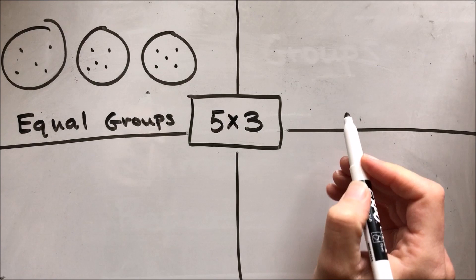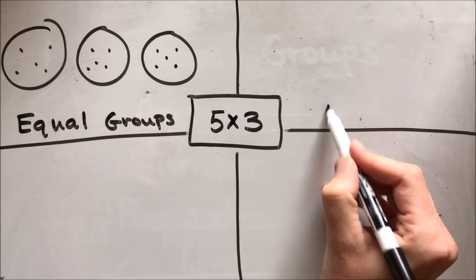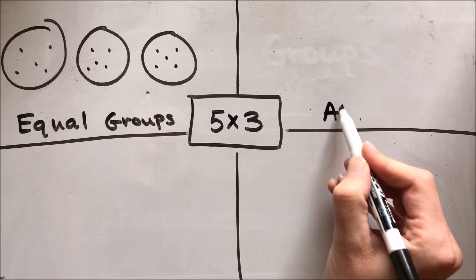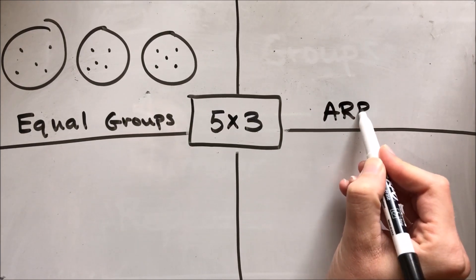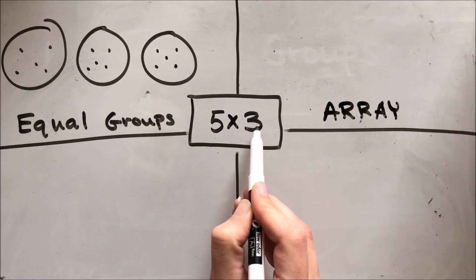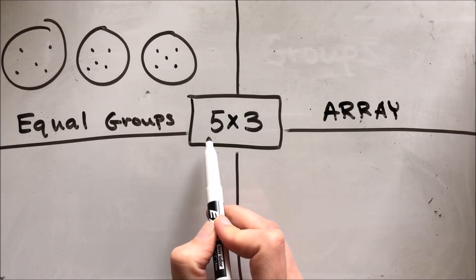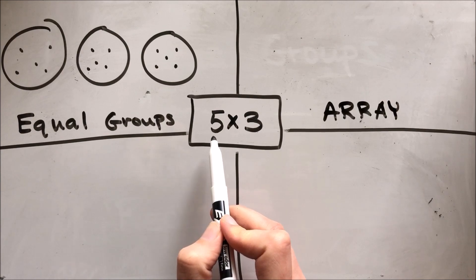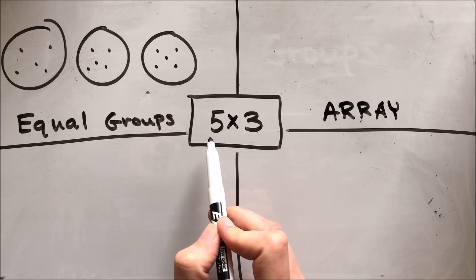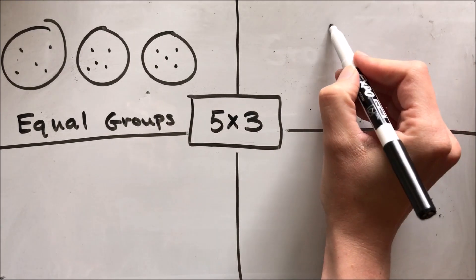Next, I'm going to show five times three using an array. That means I'll have either five rows of three objects or three rows of five objects — you choose. Just make sure that when you draw an array, you have rows and columns.